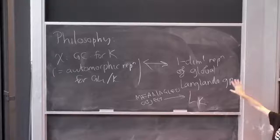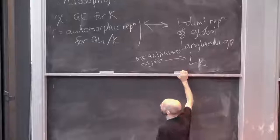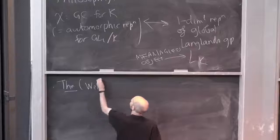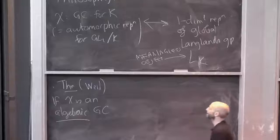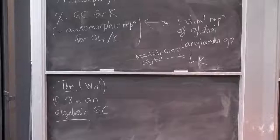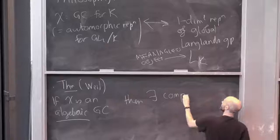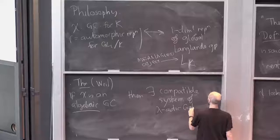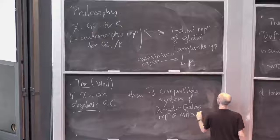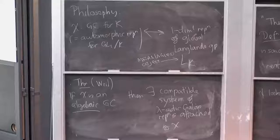But let me tell you a theorem, which is due to Weil. If chi is an algebraic Grössencharacter — meaning that complex number s is an integer — then lo and behold, there exists a compatible system of lambda-adic Galois representations attached to chi. If all the random complex numbers turn out to be whole numbers, there's nothing stopping us constructing lambda-adic representations attached to chi.